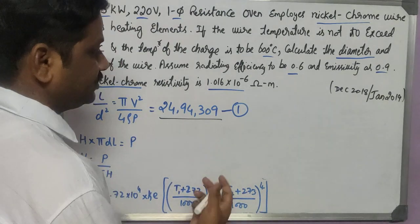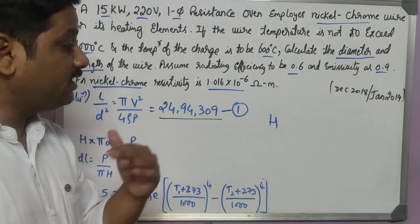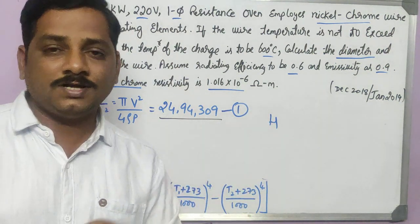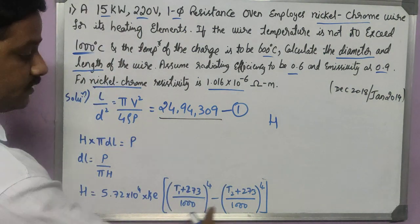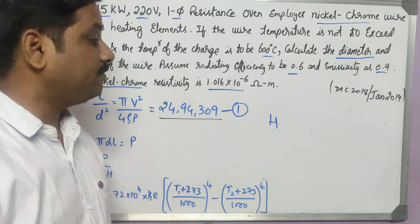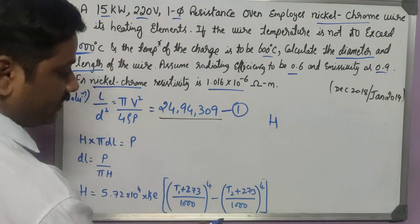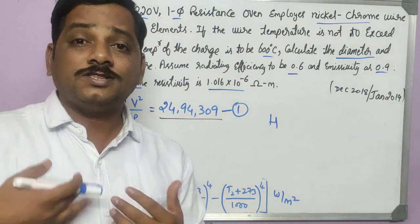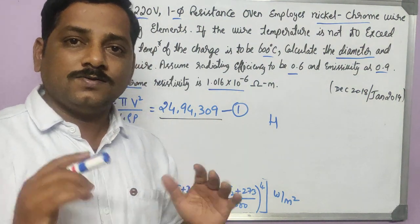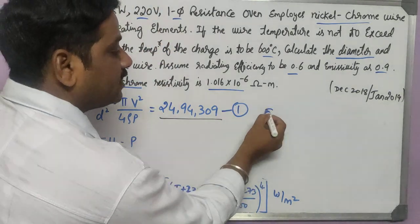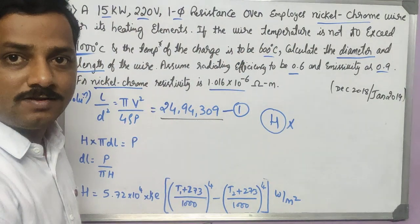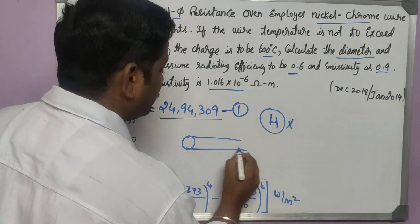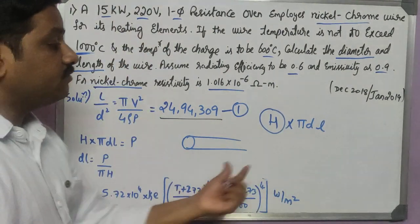H is according to Stephen's law, the heat liberated through radiation. In an oven or any furnaces, the heat liberated through radiation can be denoted as H. That H is equal to the formula given here. H is the heat liberated through radiation per unit square area, in watts per meter square. If I want to find the total heat liberated by the nichrome wire, the total heat liberated is heat liberated per unit area into the total area, which is the surface area of the nichrome.